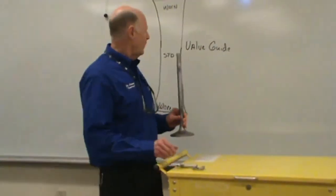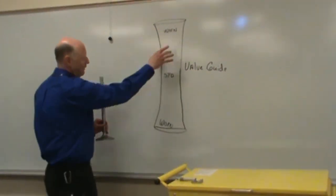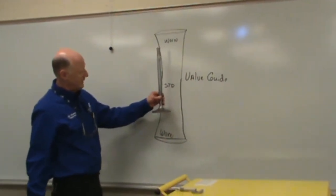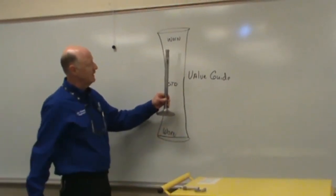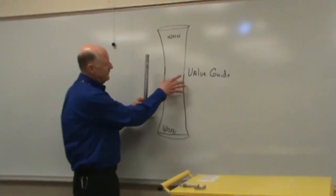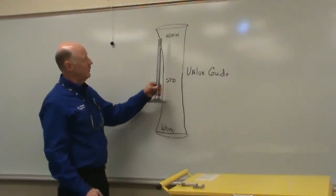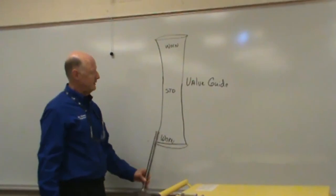A valve guide wears in an hourglass shape, so the valve fits inside the guide, this is a blown up version of the guide, thus it never wears in the center. It always wears at the top and in the bottom.